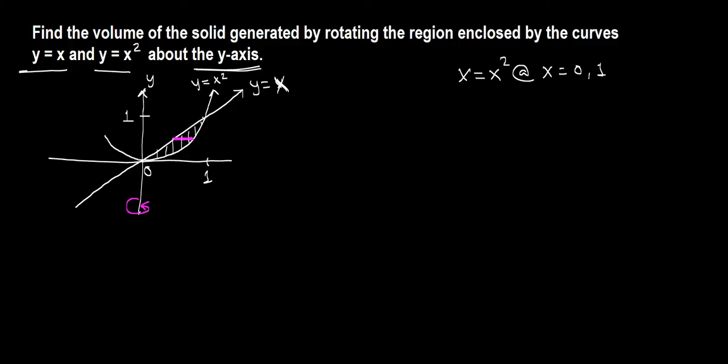Okay, so we need to rewrite these functions as x equals some function of y. So y equals x is the same as x equals y, so this curve is x equals y. Next, y equals x squared is the same as take a square root both sides, then you get x equals root y, so this will be x equals root y.